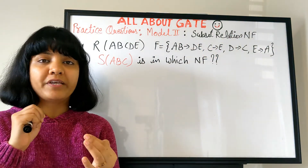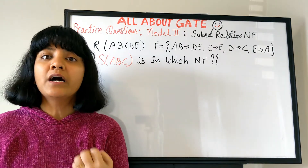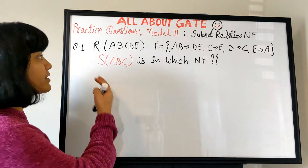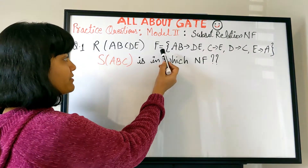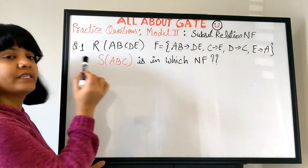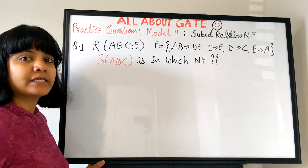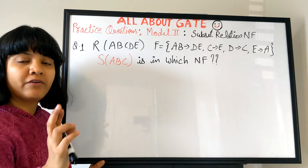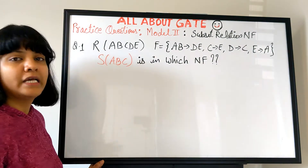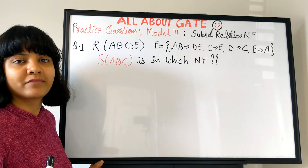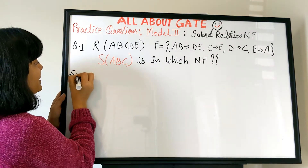We will be given a relation, its functional dependency set, and a small subset relation out of it, for which we have to find the normal form. The question looks like this: a relation R with attributes A, B, C, D, E and a functional dependency set. It asks: assume there is another relation S with 3 attributes A, B, C — what is the normal form for relation S? The FD set is given only for the bigger relation, not for the smaller one. So there is something new to calculate.